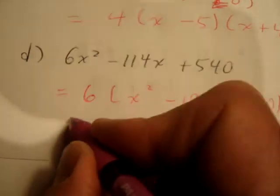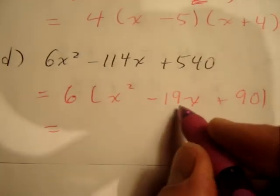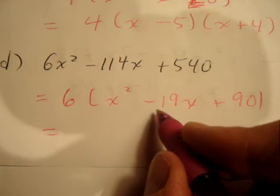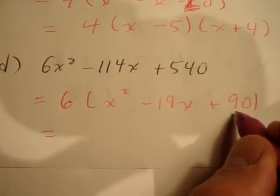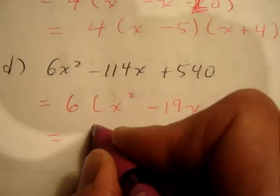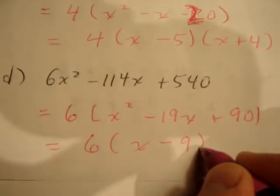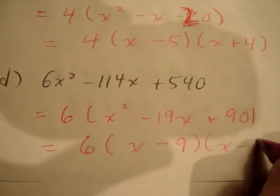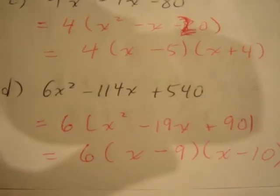We now want to determine two numbers that multiply to positive 90 and add to -19. Those numbers will have to be negative, each of them, and we settle on -9 and -10. So we realize that 6(x - 9)(x - 10), if it were to be expanded out, would equal this. So we have successfully factored that trinomial.